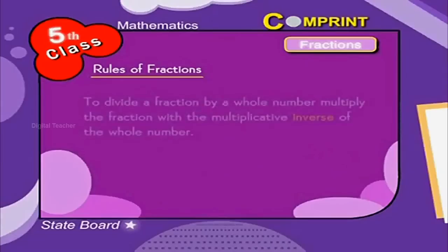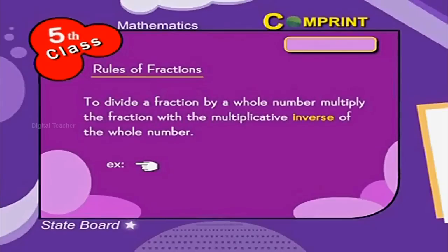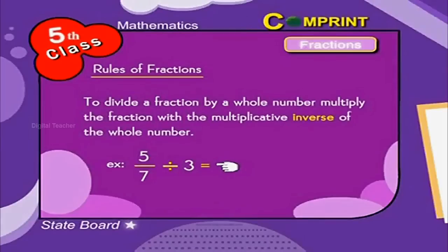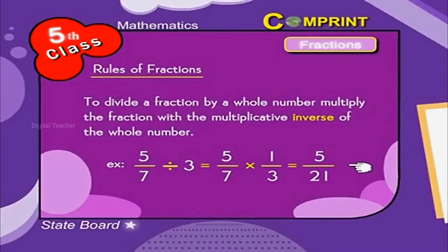To divide a fraction by a whole number, multiply the fraction with the multiplicative inverse of the whole number. Look at the example: 5 by 7 divided by 3 should be written as 5 by 7 into 1 by 3, which equals 5 by 21.